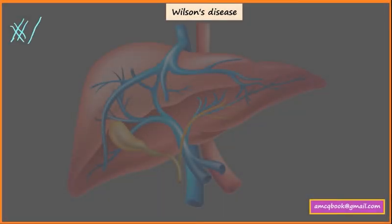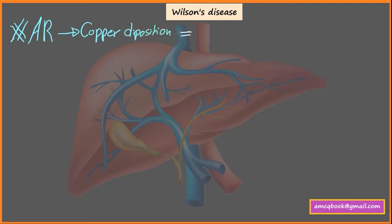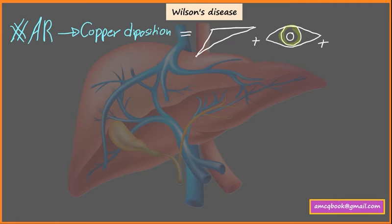Wilson disease is an autosomal recessive disease that leads to copper deposition in various organs, especially the liver, the cornea of the eye, and the basal ganglia. Copper deposition in the liver leads to cirrhosis.